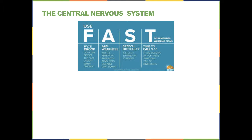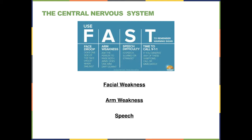The symptoms of a stroke are shown here and you can always remember FAST — F-A-S-T. The F stands for facial weakness: you ask the person to smile and one side of their face doesn't go up appropriately. The A is arm weakness: you ask the person to raise both arms and one will drift down. The S is speech — they'll have trouble speaking, trouble picking words, or slurred speech. The T stands for time, meaning you need to call 911 as soon as possible once you suspect a stroke.